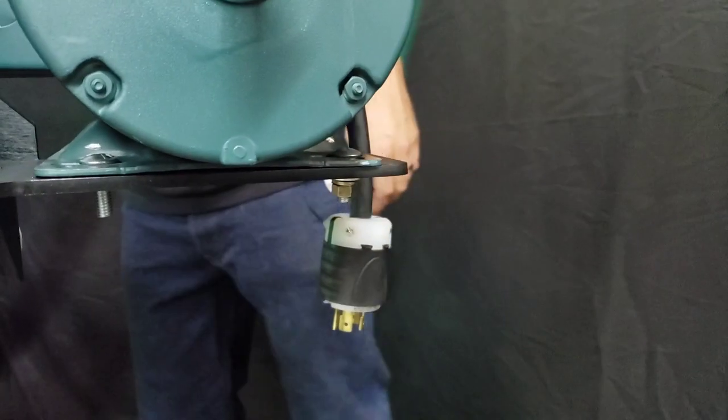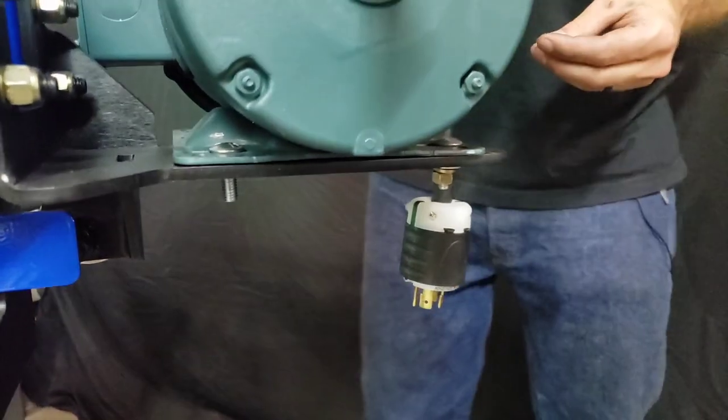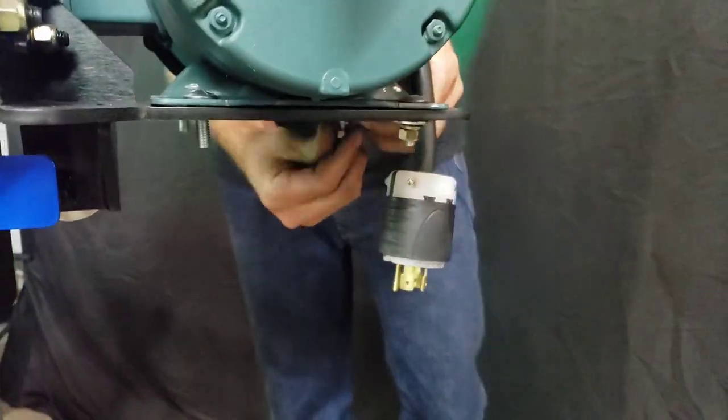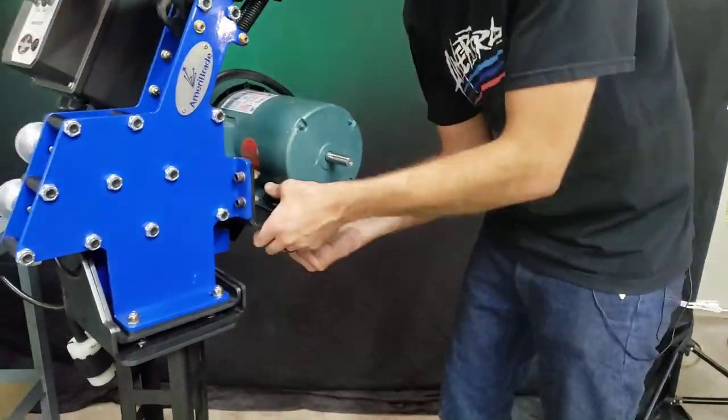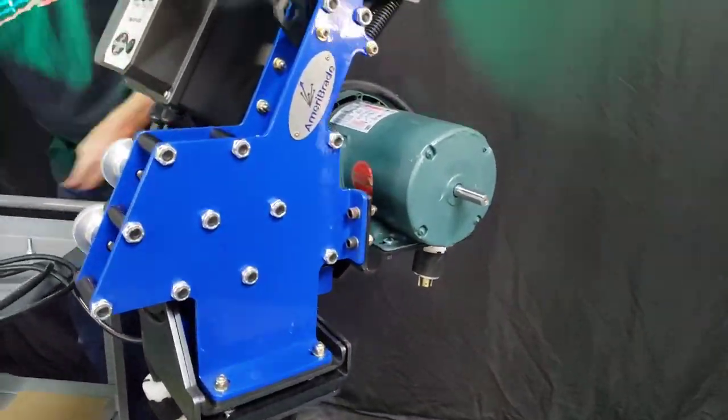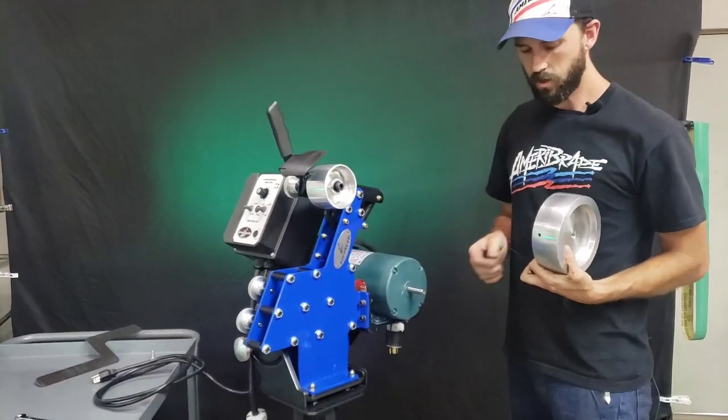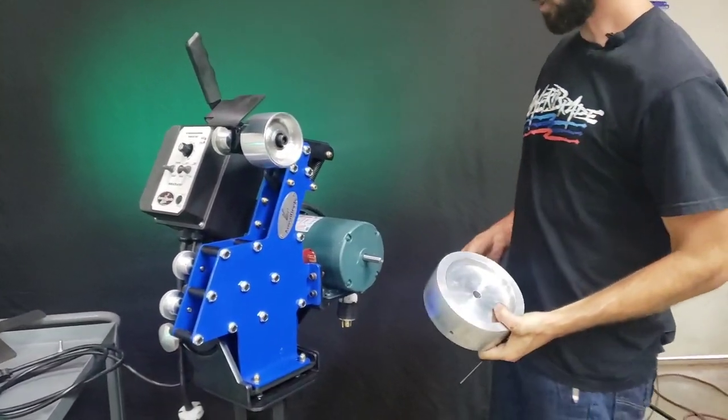Leave these loose for now. We're going to slide it around and get the motor aligned. Once you've got your motor loosely mounted up there, you're going to install your drive wheel. Make sure your key stock is installed.